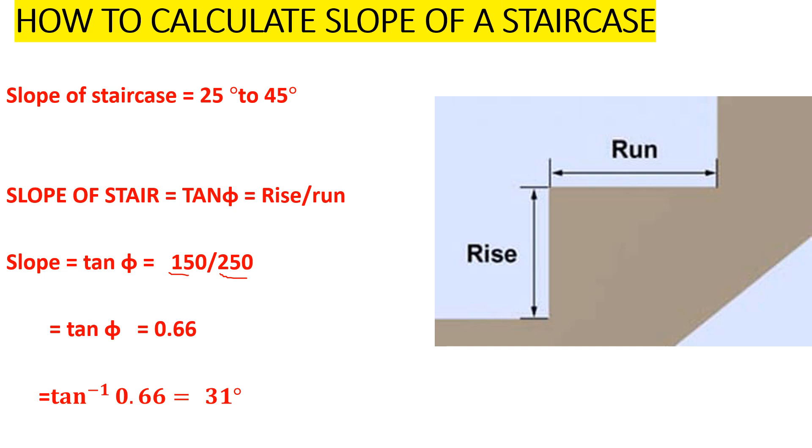So if we divide 150 by 250, we get 0.66. So we have tan theta which is equivalent to 0.66. So for us to get our angle theta, it will be tan inverse of 0.66.